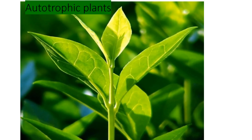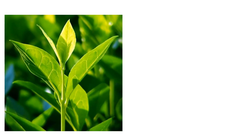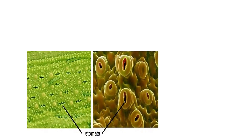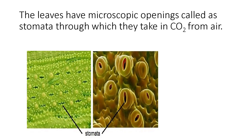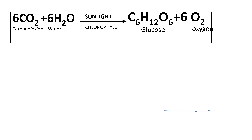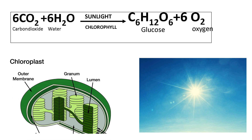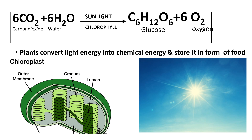Let us understand why plants are called autotrophic. Do you know why plants are green in color? The leaves of the plant contain chloroplasts, in which a green color pigment called chlorophyll is enclosed. This chlorophyll is used for synthesizing the food of plants by the process called photosynthesis. The leaves also have microscopic openings called stomata through which they take carbon dioxide (CO₂) from the air. Carbon dioxide from the atmosphere and water from the soil combine in the presence of sunlight and chlorophyll to synthesize food — that is glucose — and during this process oxygen is given out. Thus plants convert light energy into chemical energy and store it in the form of food.